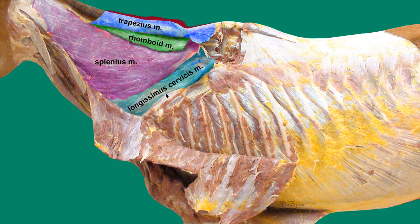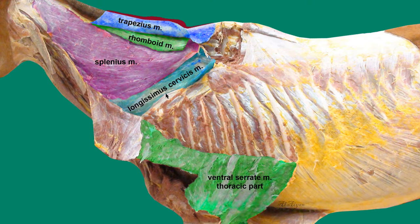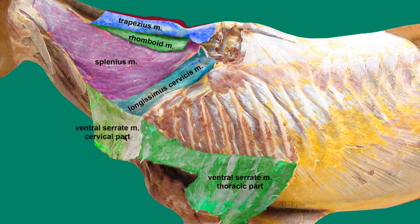The next muscle is the ventral serratus muscle, which has two parts. The thoracic part originates from the ribs and inserts to the serrated face of the scapula. The cervical part of the ventral serratus muscle originates from the transverse processes of the cervical vertebrae and inserts to the same area of the scapula — the serrated face.